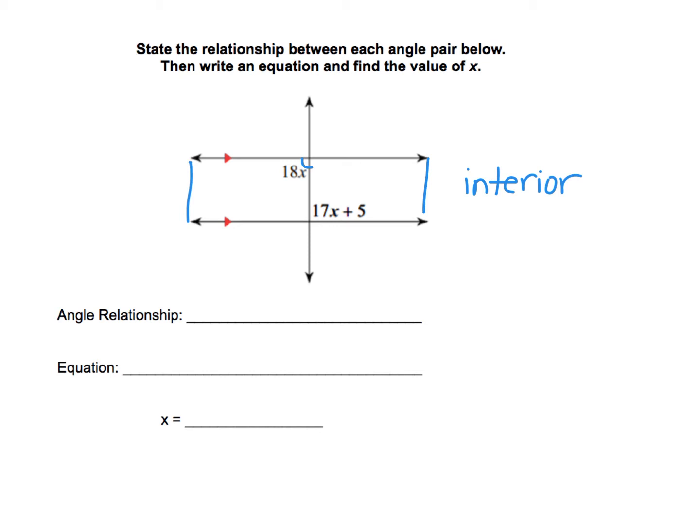So 18x is to the left, 17x plus 5 is to the right. So that makes these alternate interior angles. So that is the angle relationship.